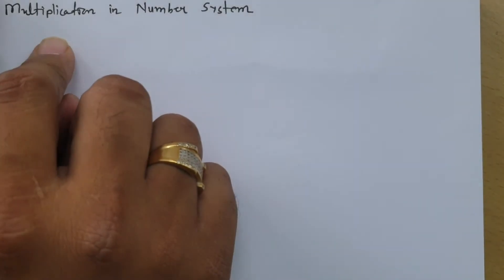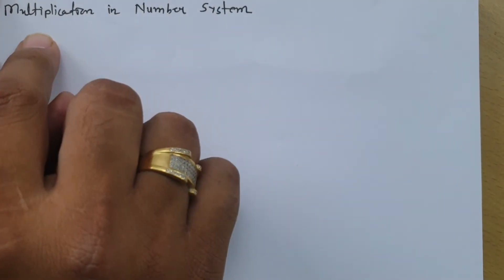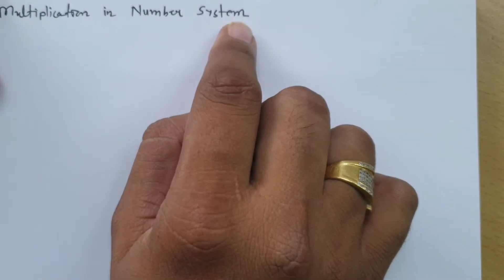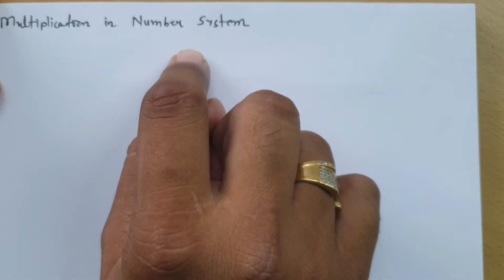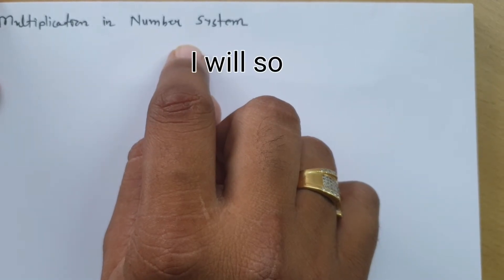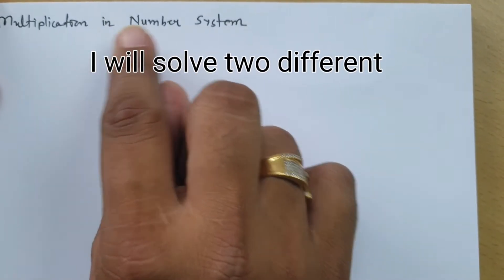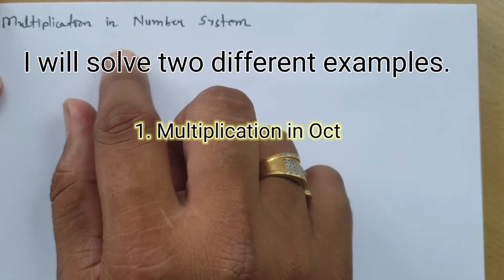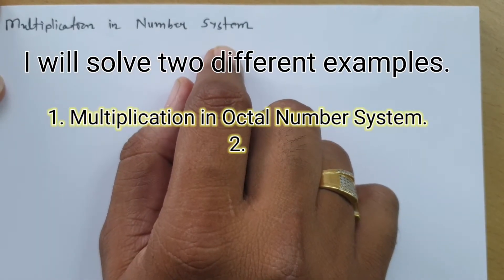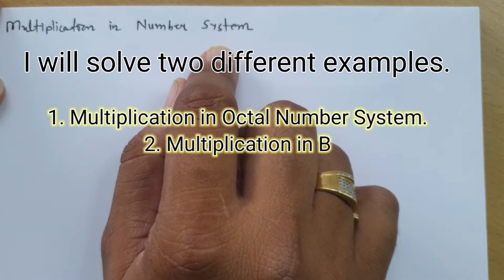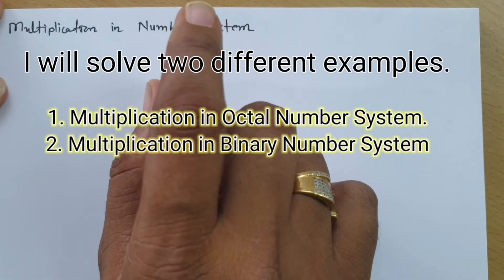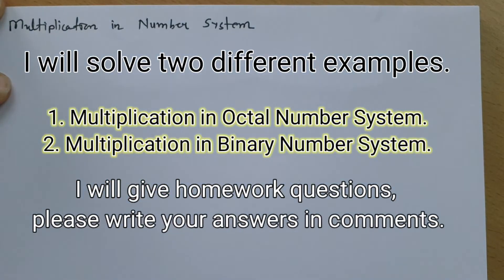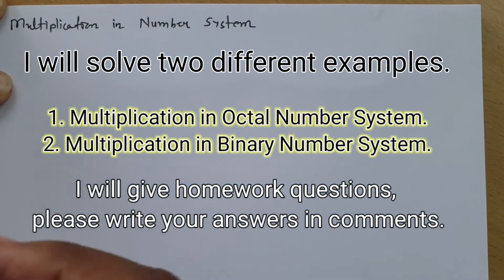Welcome to the digital electronics lecture series. In this session I will explain multiplication in number systems. I will be covering two different examples: one is multiplication in the octal number system, and second is multiplication in the binary number system. Based on that, you should be able to solve problems for any number system. So let us start with the first problem based on multiplication of the octal number system.